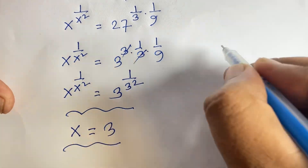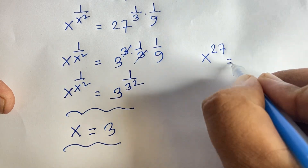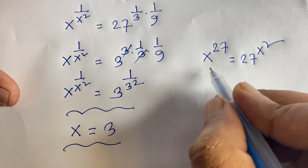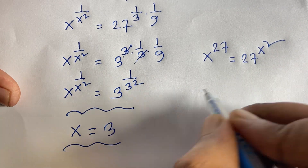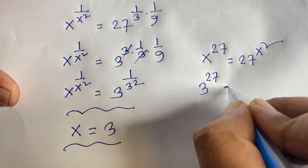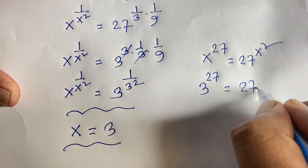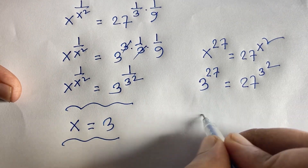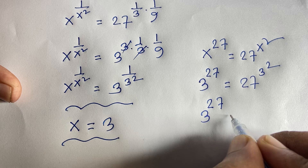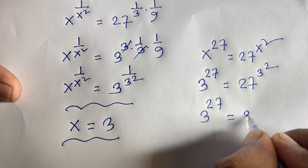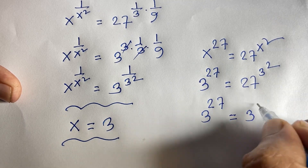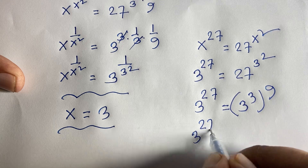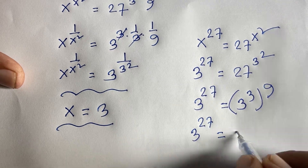Let's check our answer. Our question is x to the power 27 is equal to 27 to the power x squared. With x equal to 3, we get 3 to the power 27 is equal to 27 to the power 3 squared, which is 27 to the power 9. Now 27 to the power 9 equals 3 cubed to the power 9, which is 3 to the power 27. So 3 to the power 27 is equal to 3 to the power 27.